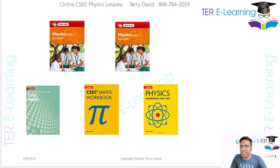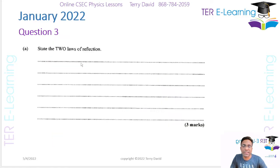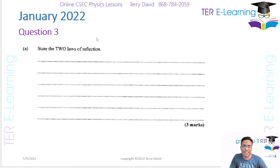The question I'm on now is the third question. This question says: state two laws of reflection. If you have to answer a question like this, what I suggest you do is sketch a diagram — find a little space somewhere and try to sketch a diagram.